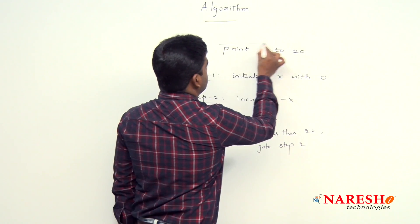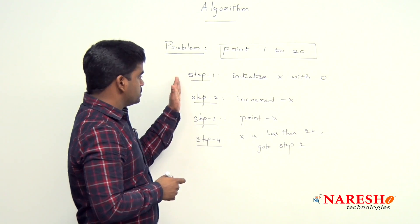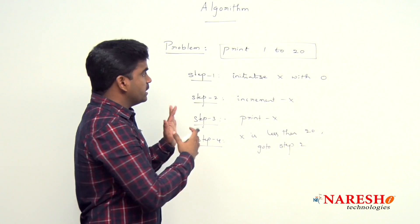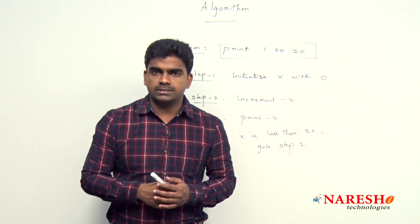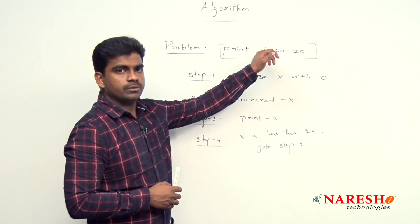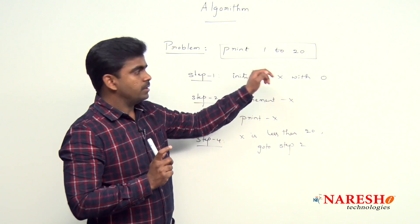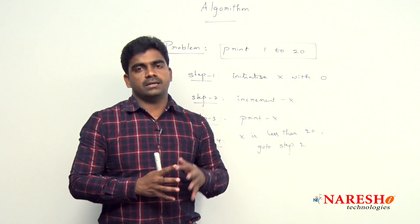So the problem of just printing 1 to 20, we are representing in four simple steps. Here we are using the natural language. So the representation of a solution, I mean representation of solution of a problem with simple steps is nothing but algorithm.